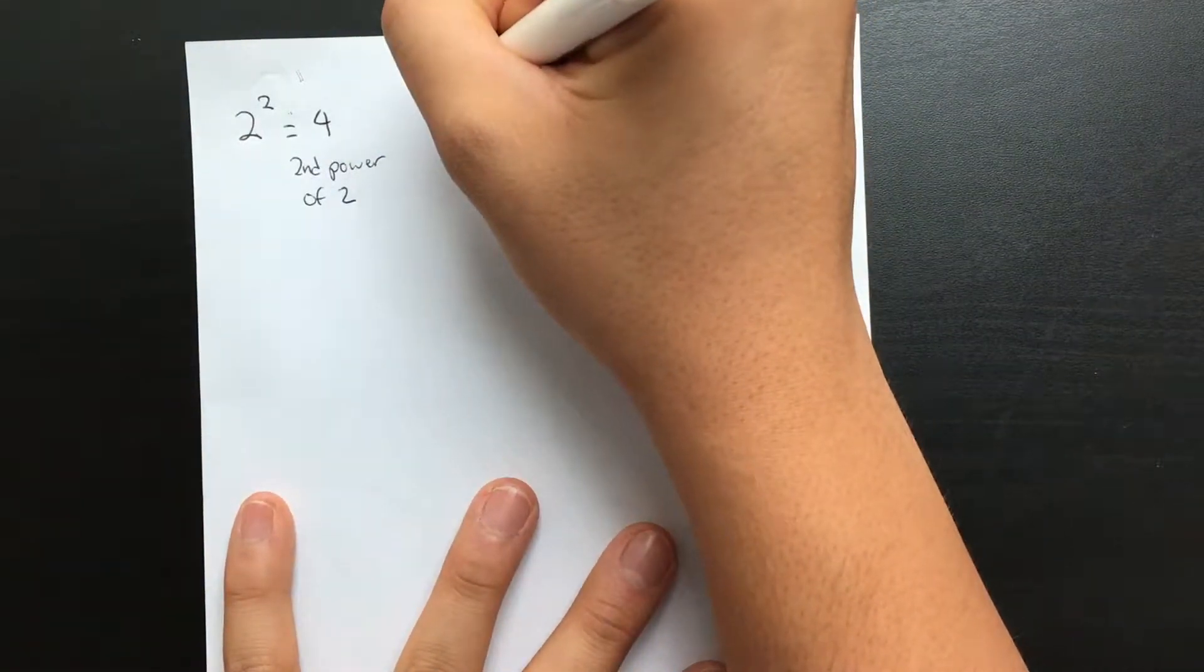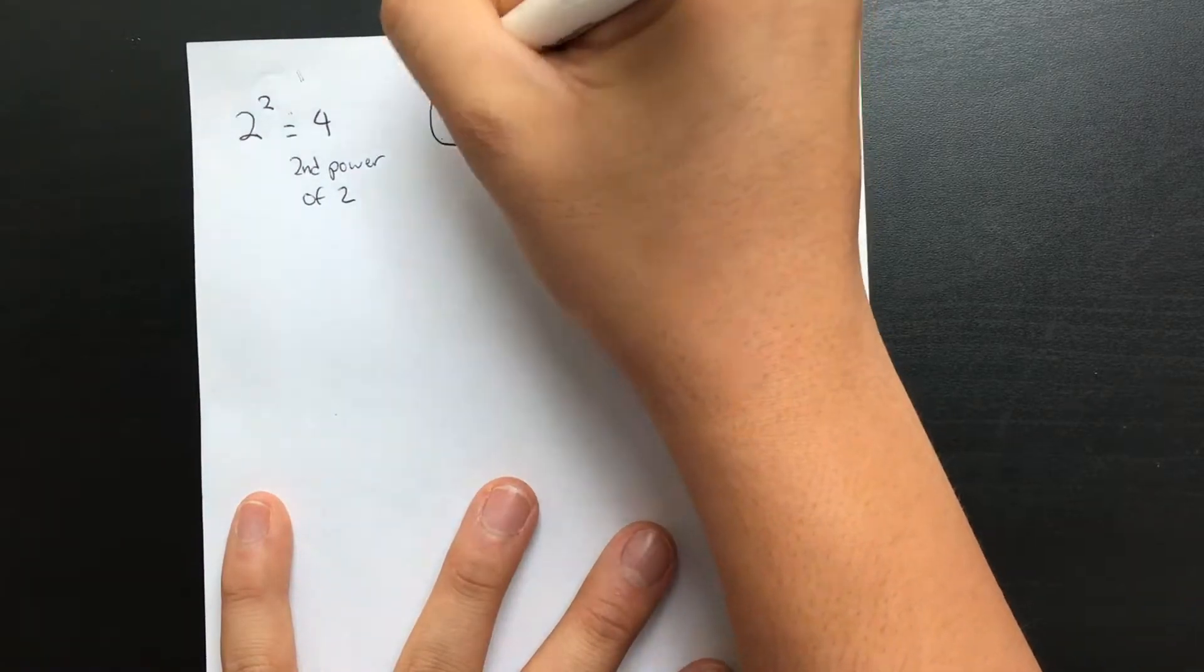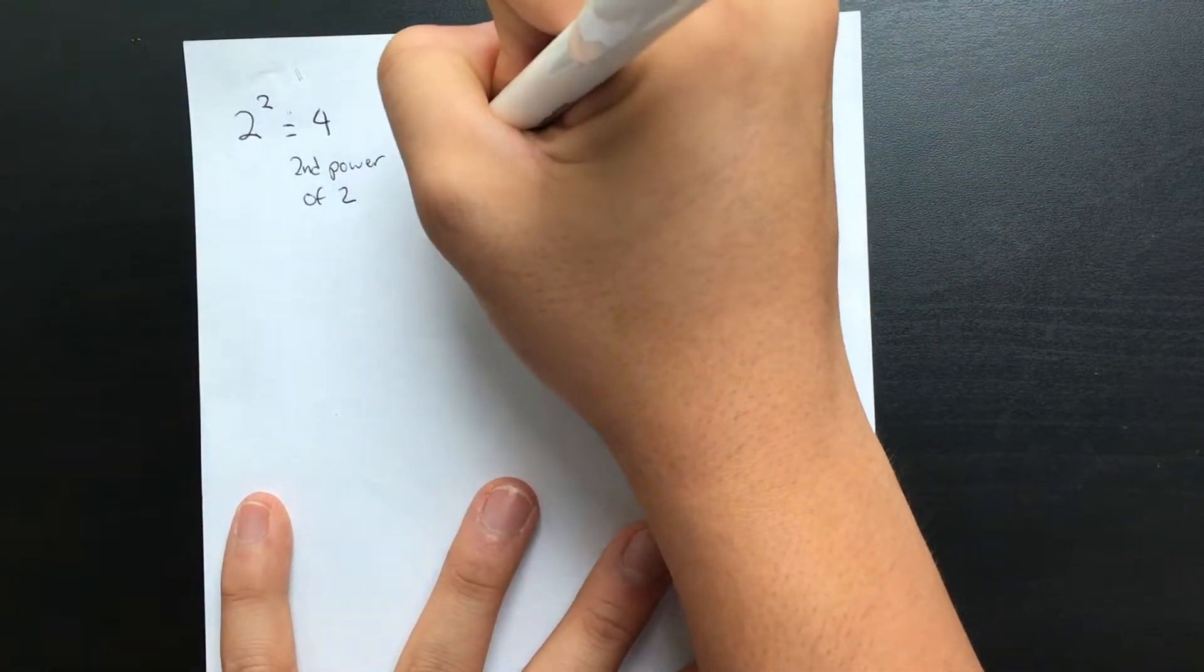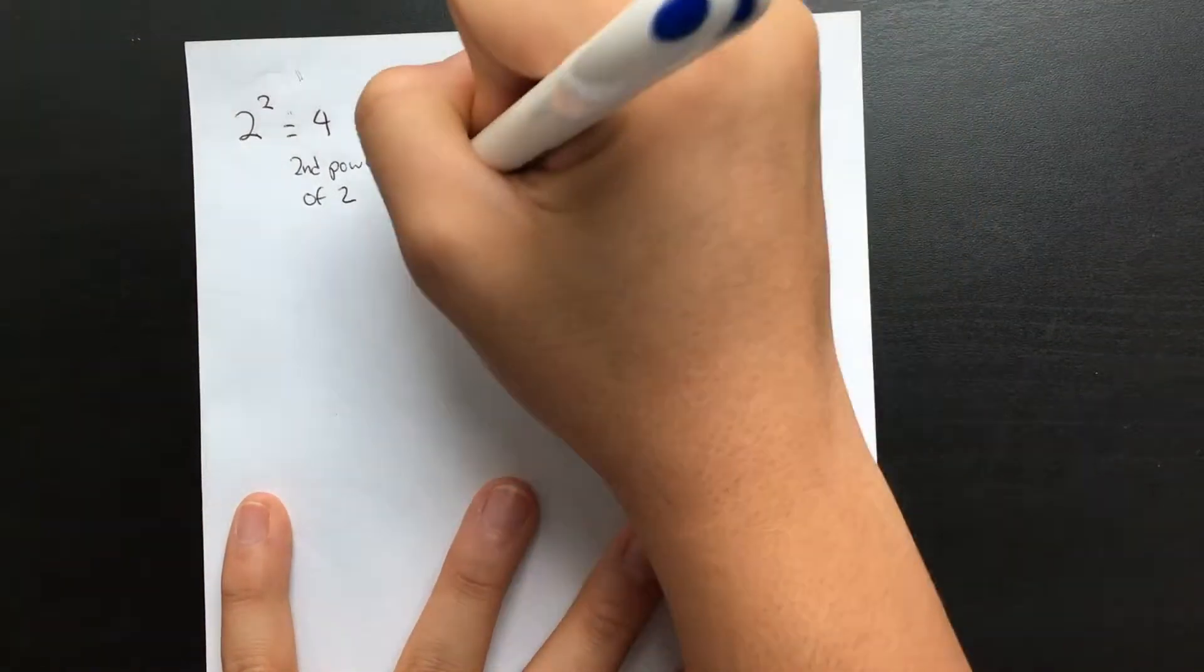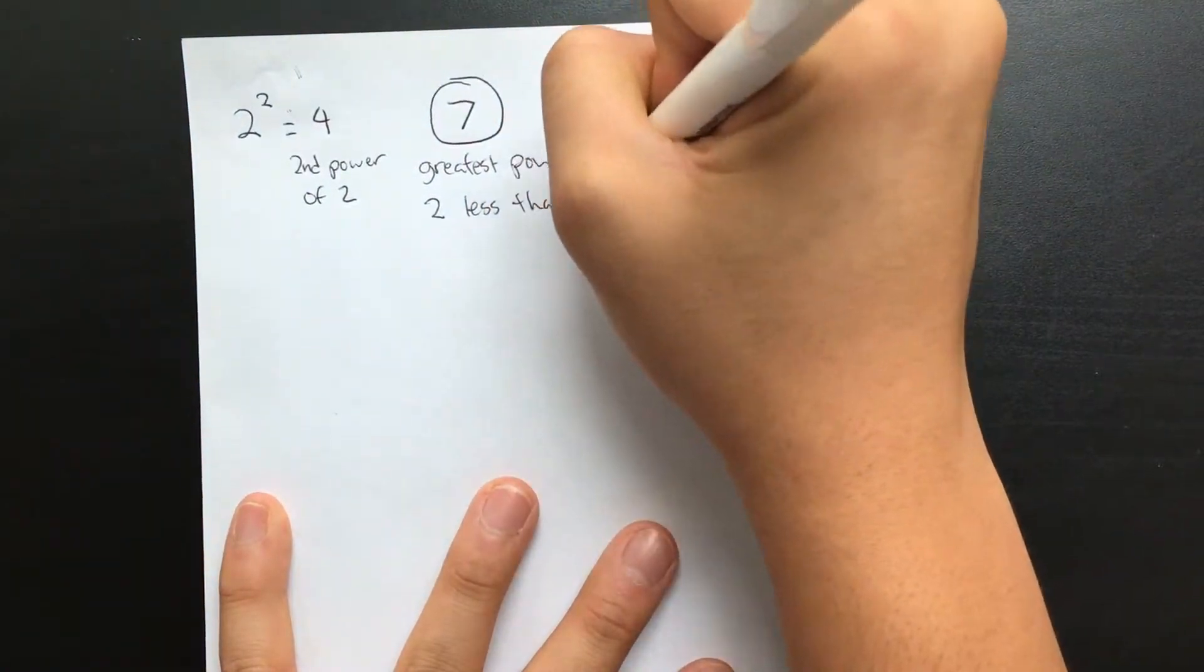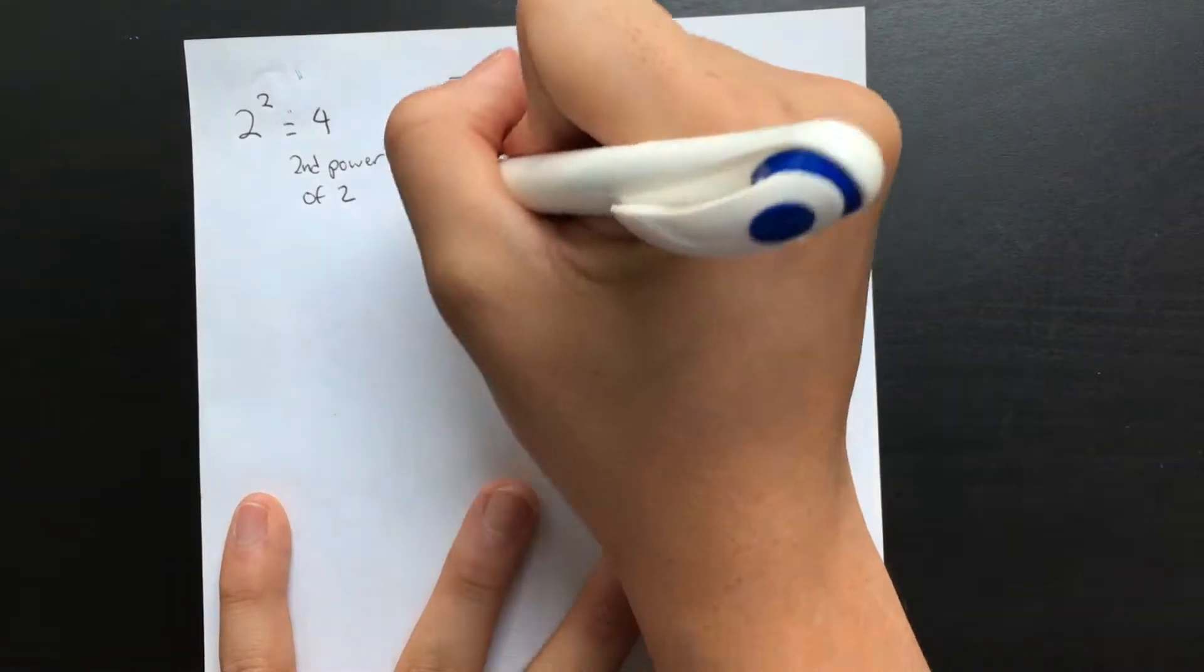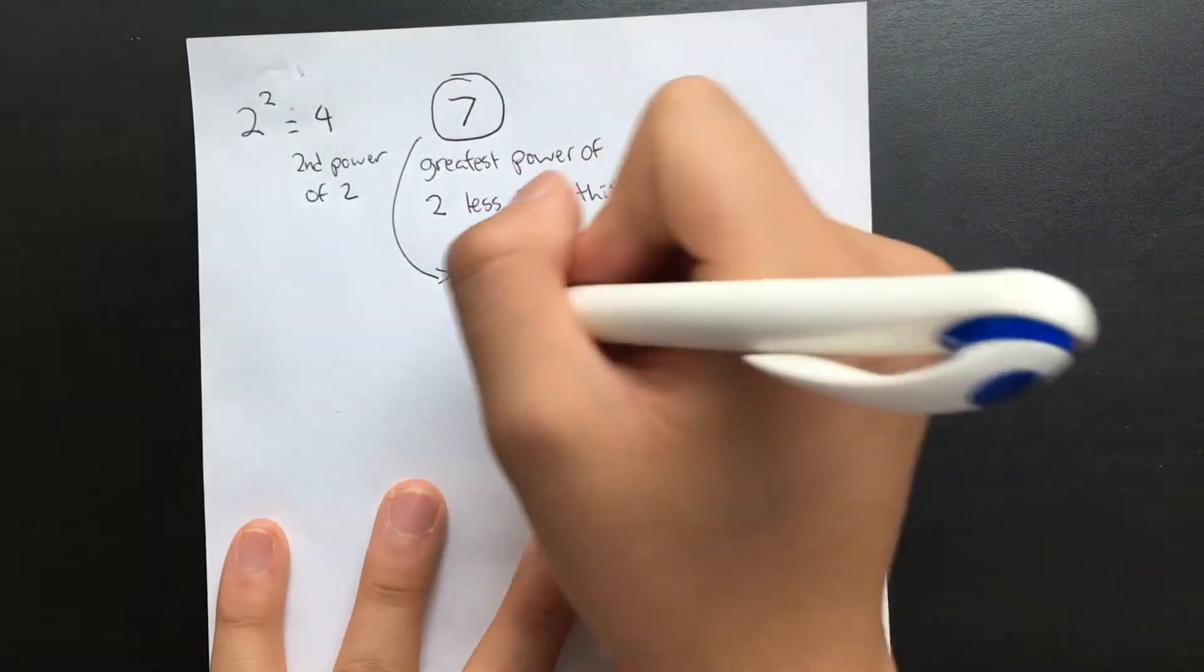Now, let's say you wanted to divide your paper into 7 segments, right? What you want to do is find the greatest power of 2 that is less than the number you've chosen, or equal, depending on which number you've chosen. In the case of 7, that would be 4.